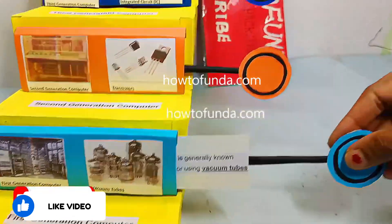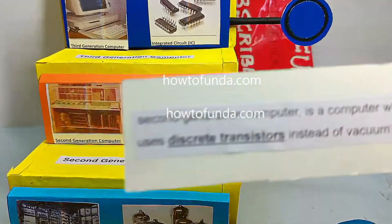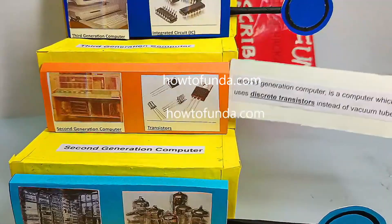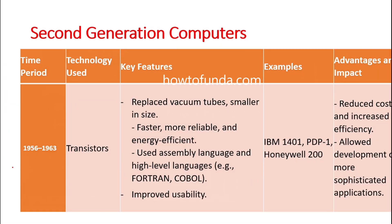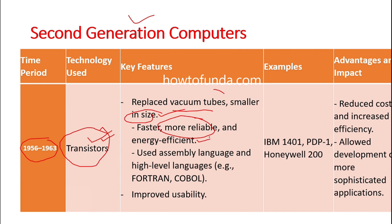Moving on to second generation computers, from 1956 to 1963, these were manufactured using transistors. Vacuum tubes were replaced with transistors, which are very small in size, faster, more reliable, and energy efficient. In transistor-generation computers, assembly language and high-level languages such as Fortran and COBOL were used, which improved programming visibility.